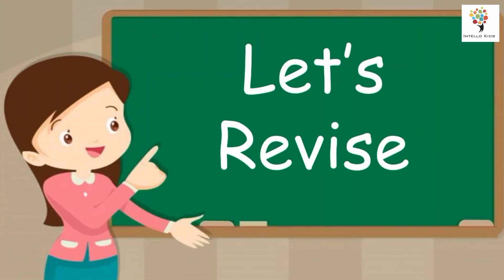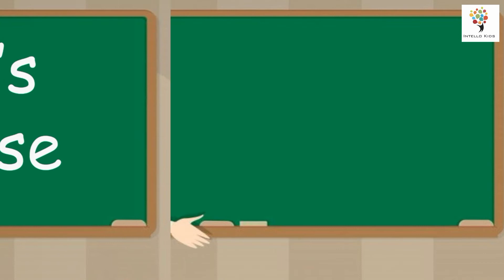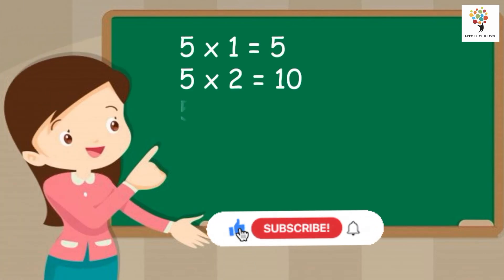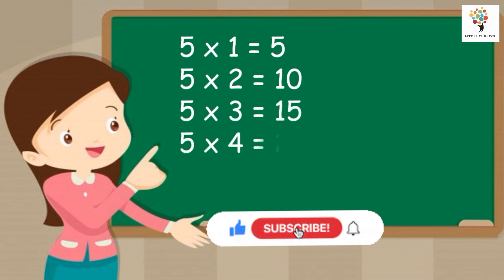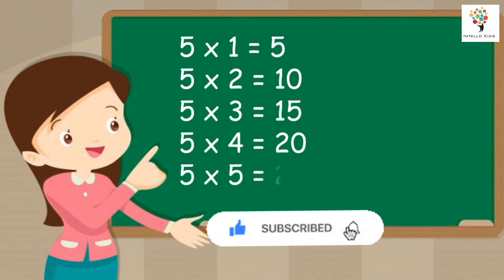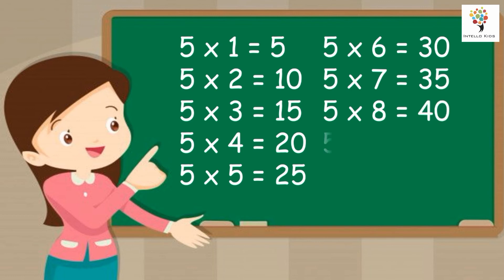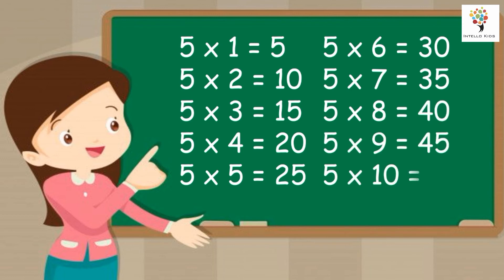Let's revise. Five ones are five. Five twos are ten. Five threes are fifteen. Five fours are twenty. Five fives are twenty-five. Five sixes are thirty. Five sevens are thirty-five. Five eights are forty. Five nines are forty-five.